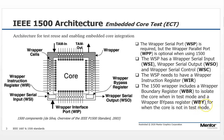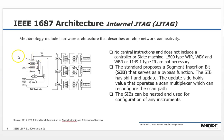It also requires a wrapper boundary register, and a wrapper bypass register is utilized when the core needs to be bypassed. IEEE 1687 architecture is internal JTAG. This methodology includes hardware architecture that describes on-chip network connectivity. There are no central instruction functions and it does not include a controller or state machine like the 1500-type WIR, WBY, or bypass, or the 1149.1-type IR — those are not necessary. The standard proposes a segment insertion bit, which is SIB, that serves as a bypass function. The SIB has shift and update. The update side holds the value that operates the SIB as a scan multiplexer, which can reconfigure the scan paths. The SIBs can be nested and used for configuring any number of instruments.